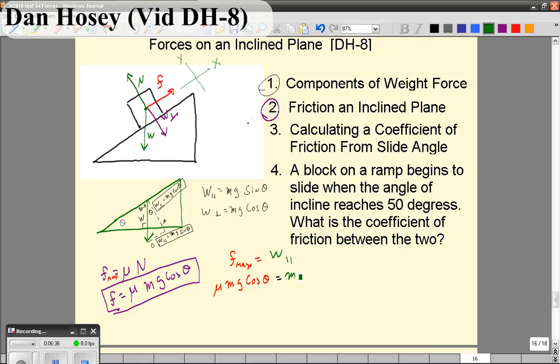Interestingly, the mg's cancel out, and if I bring cosine theta over here, you get mu equals sine theta over cosine theta, better known as tangent of theta.